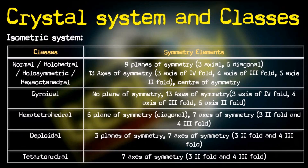Next we have the crystal classes of the isometric system, which I will be discussing in detail here. As we have already seen, the isometric system has five classes.